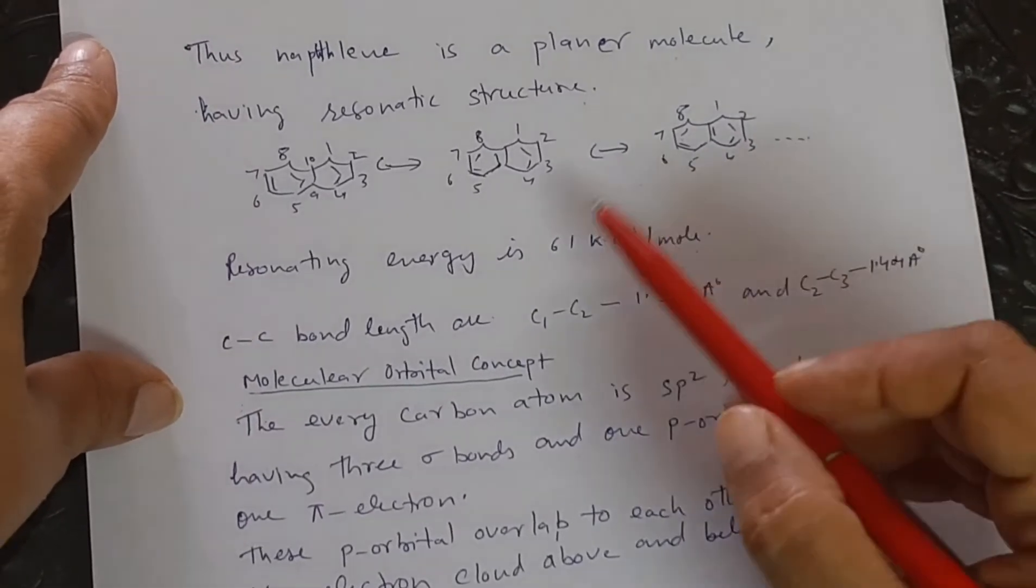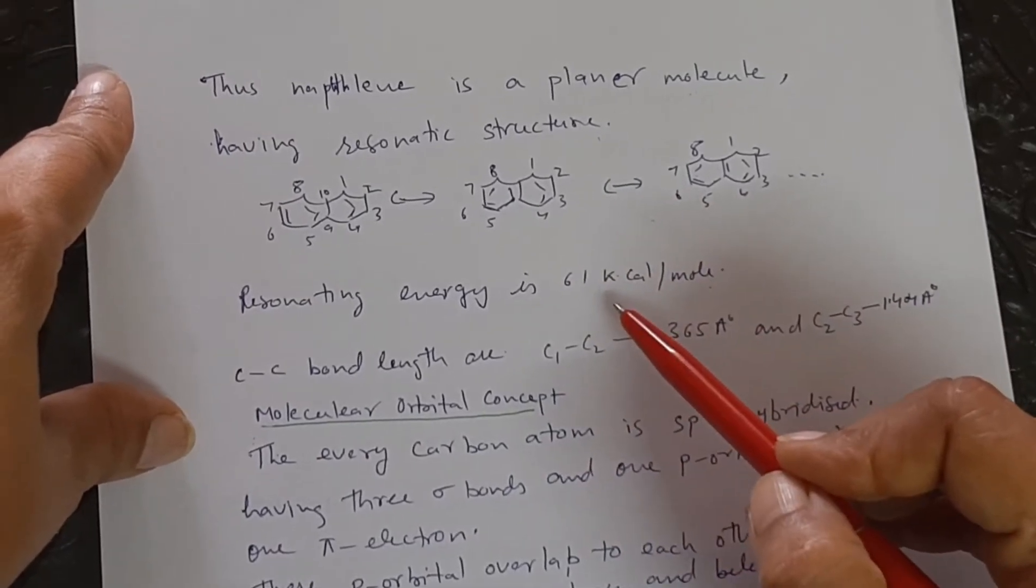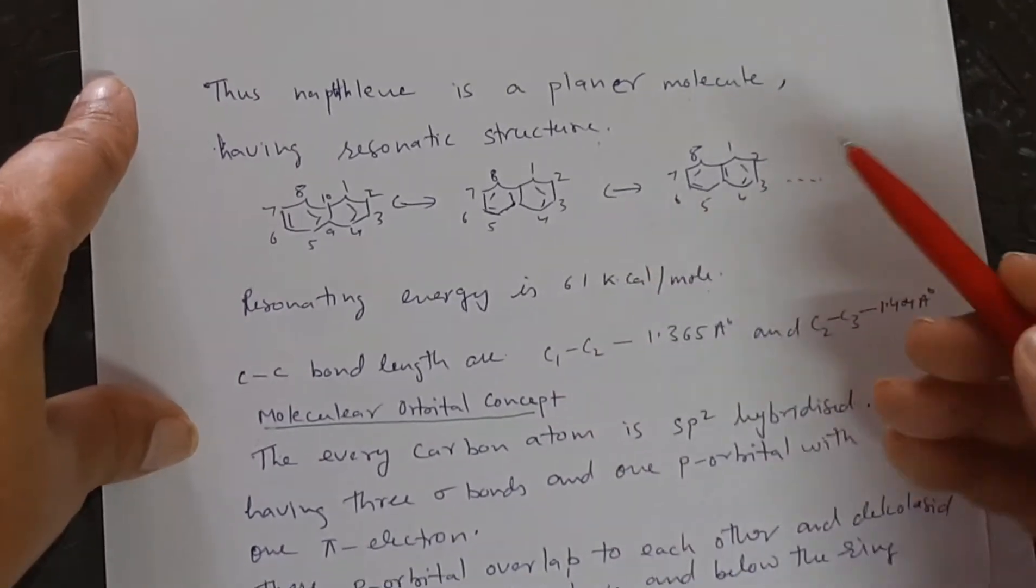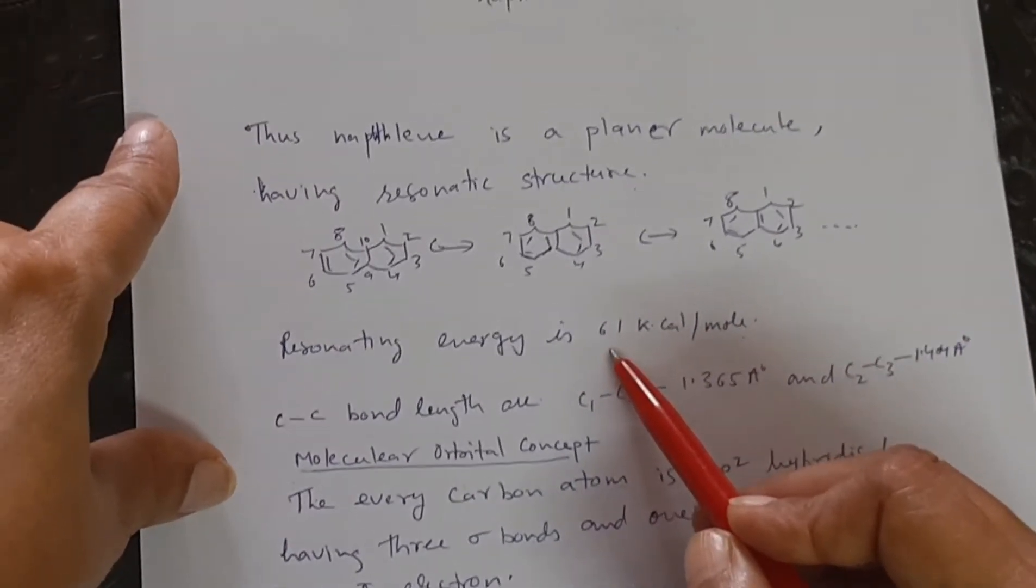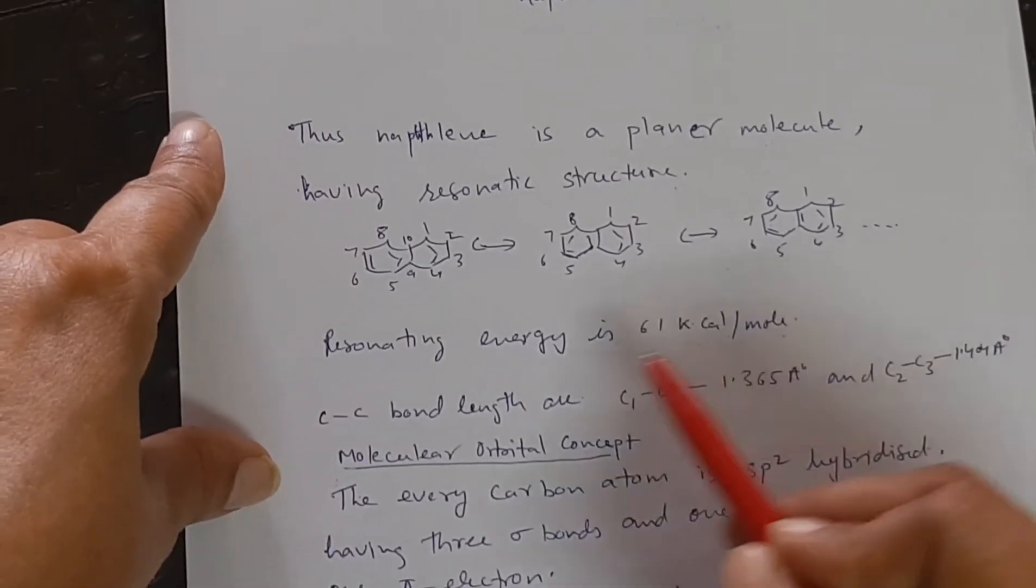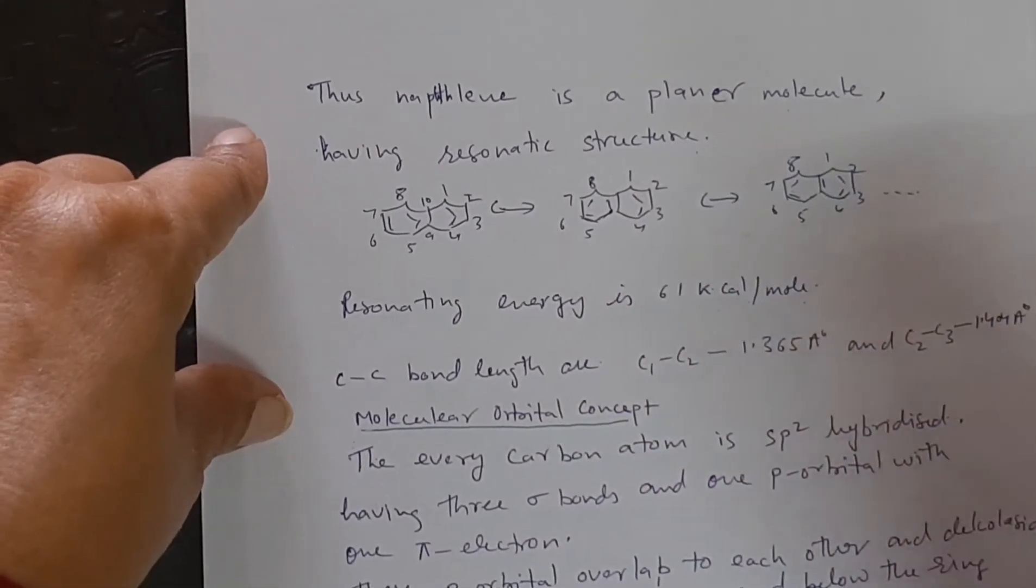And in naphthalene, if there are 2 benzene rings, then the resonating energy must be near about 72 kilocalorie. But it is 61 kilocalorie per mole. This shows that naphthalene is not as stable as benzene.